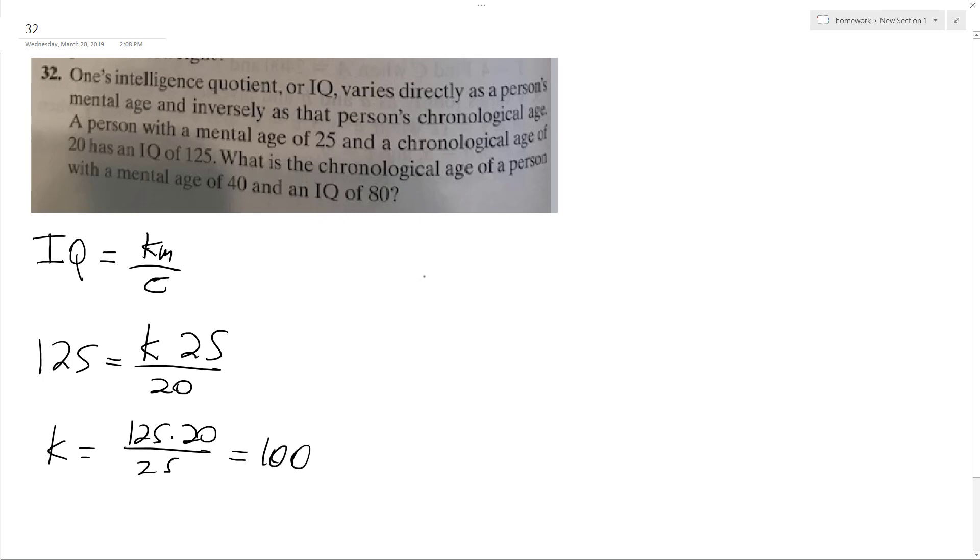Now that we have that, we've got a person who has an IQ of 80, and now that we know K, we can type in 100, and then our mental age which we do not know, divided by mental age.